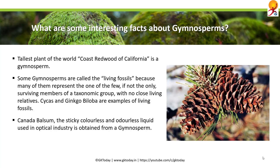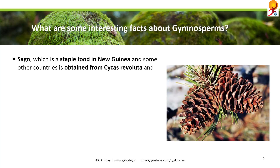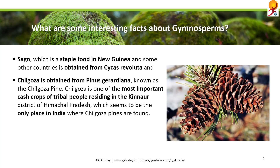Canada balsam, the sticky, colorless, and odorless liquid used in the optical industry, is obtained from a gymnosperm. Ephedrine is obtained from Ephedra, a naturally growing gymnosperm in Rajasthan. Sago, a staple food in New Guinea and some other countries, is obtained from Cycas revoluta. Chilgoza is obtained from Pinus gerardiana, known as the Chilgoza pine — one of the most important cash crops of tribal people in Kinnaur district of Himachal Pradesh, which appears to be the only place in India where Chilgoza pines are found.